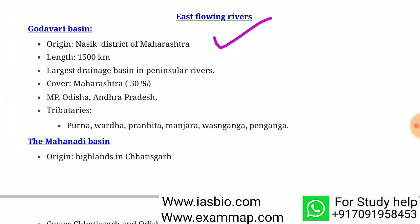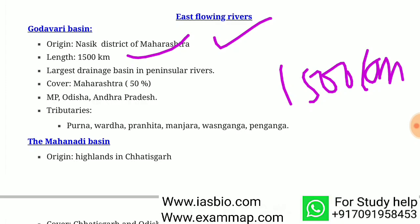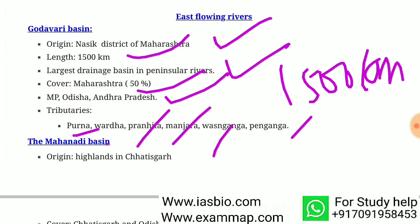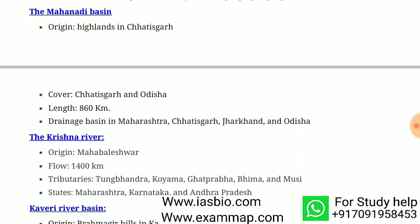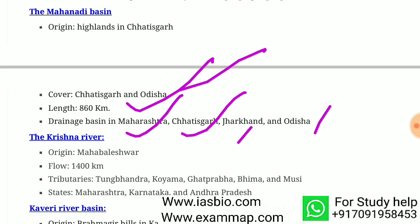East flowing rivers include the Godavari, which originates in Nashik district of Maharashtra. It is the largest east flowing river at 1,500 kilometers in length, with the largest drainage basin in the peninsular rivers, covering 50 percent in Maharashtra and the rest in Madhya Pradesh, Odisha, and Andhra Pradesh. Its tributaries are Purna, Wardha, Pranhita, Manjra, Venganga, and Penganga. The Mahanadi basin originates in the highlands of Chhattisgarh, covering Chhattisgarh and Odisha, with a length of 860 kilometers.